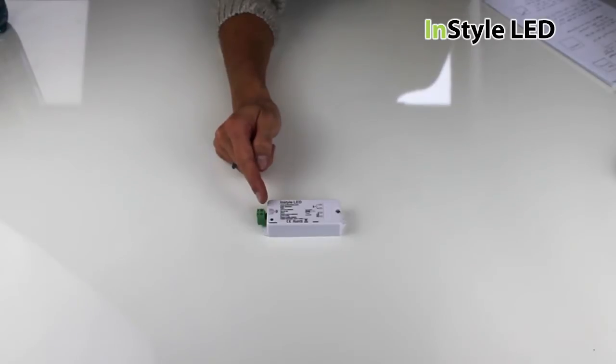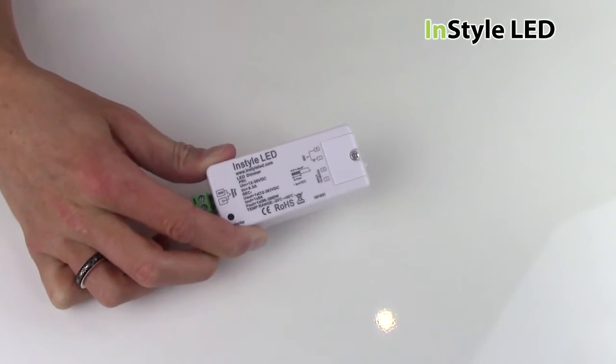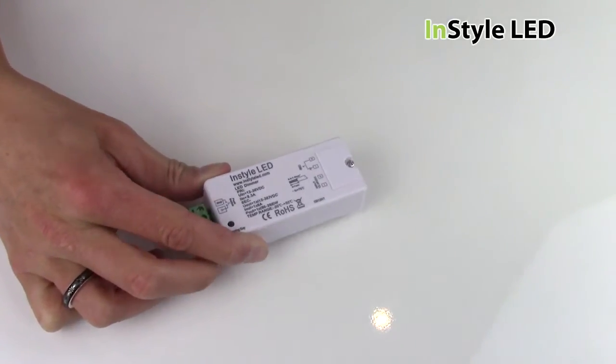The receiver will work with either 12V or 24V and has a maximum output of 8A. That is a maximum of 288W for 24V and 144W for 12V.